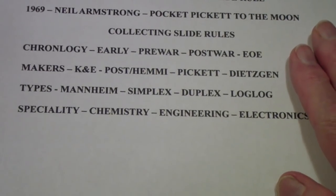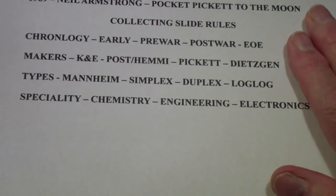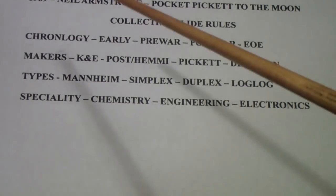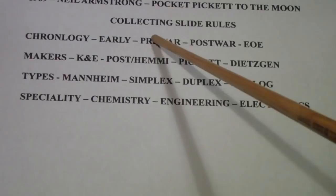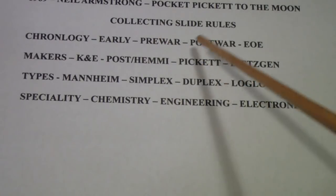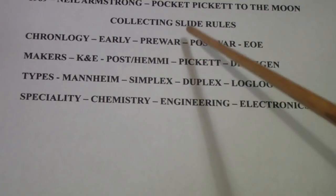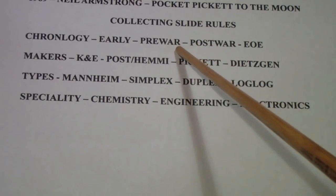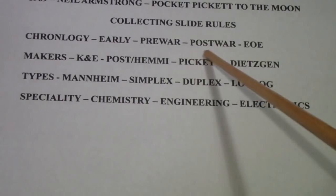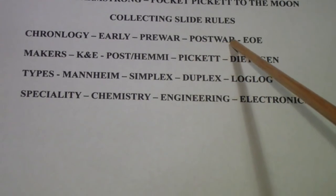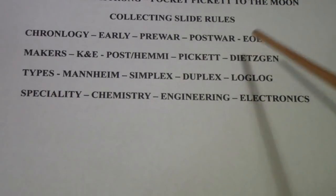So, here is some thoughts that I have had over the years about collecting slide rules. You can collect them according to chronology, either the early period, the immediate prewar period, in other words, the 30s. There was very little development of slide rules for the civilian market during the war, but after the war, a lot of the military development of slide rules broke out on the civilian scene. And so, there was a lot of postwar development. And then, what many people call end of era, when the slide rules finally went out completely, which would be the late 60s through the 70s.